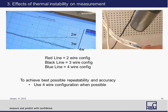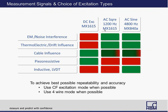The last influence on measurement is thermal instability. Using a heat gun to simulate a harsh temperature environment with the same three transducers, the two-wire mode shows maximum drift, the three-wire mode shows a little drift, and the four-wire mode shows almost no drift. So in four-wire mode you can overcome thermal instability. The recommendation is: use four-wire configuration whenever possible, and use AC excitation whenever possible to deal with noise and interference issues.